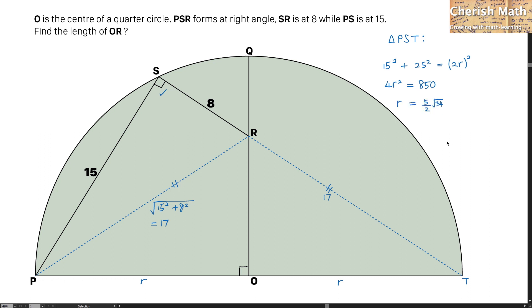Now to make R the subject, I get 5 over 2 multiplied by the square root of 34.